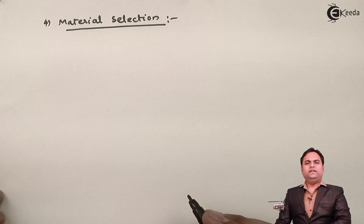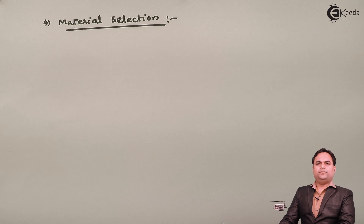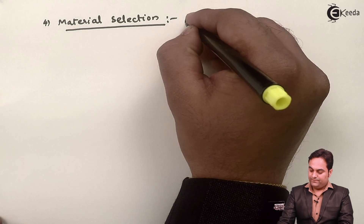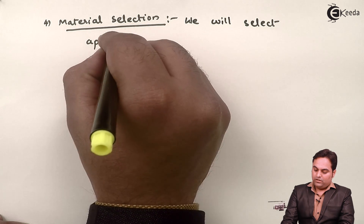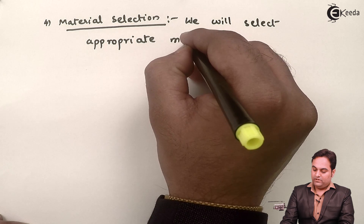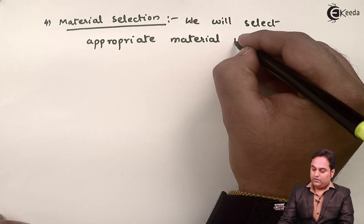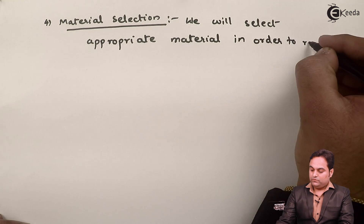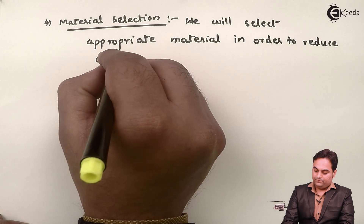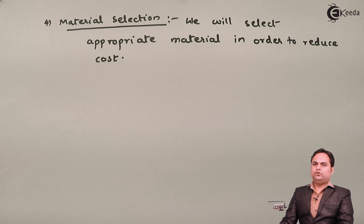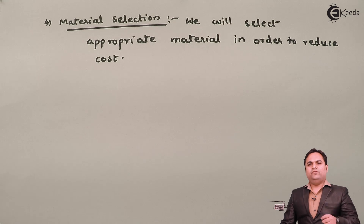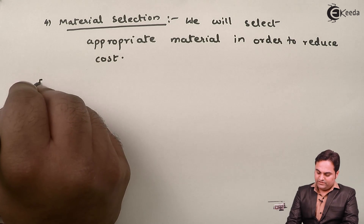The fourth step is material selection. Material selection determines the cost of the product. We select the appropriate material in order to reduce cost. We need to be aware of different kinds of materials suitable for a product, and from those we choose the most economical material — that is material selection.